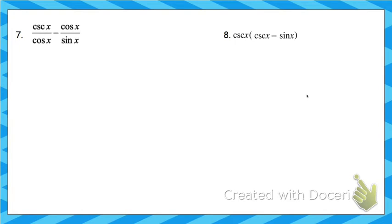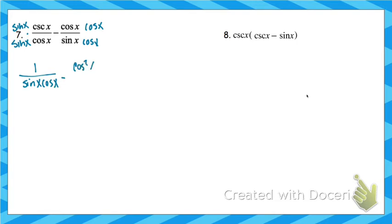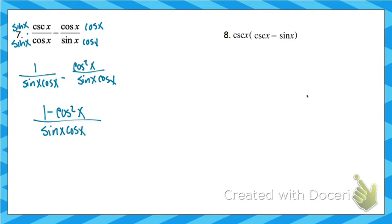This next one is another common denominator problem. I need a sine on the left fraction and a cosine on the right fraction. Sine times cosecant — anything times its reciprocal is 1. Cosine times cosine is cosine squared. Now I have the same denominator, and this looks very similar to the previous question. Combine the fractions: 1 minus cosine squared is sine squared. One of those sines cancels with the sine at the bottom, and sine over cosine is tangent.